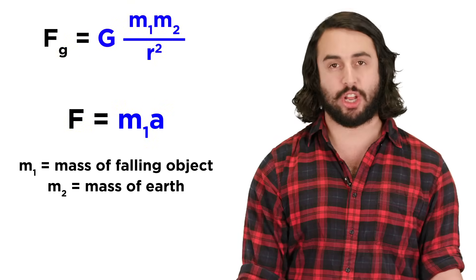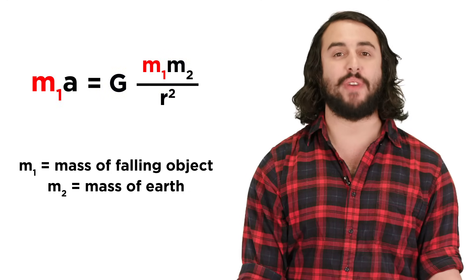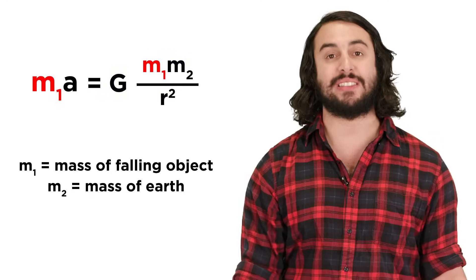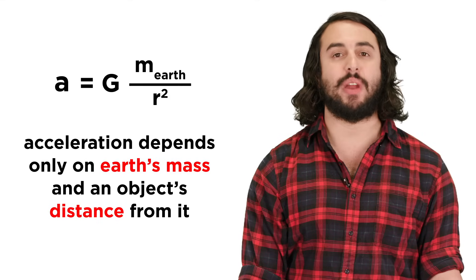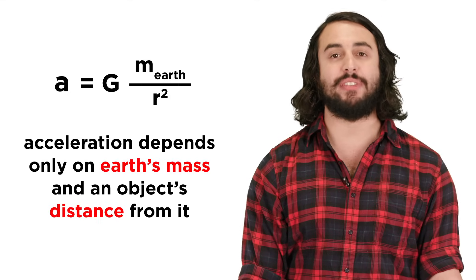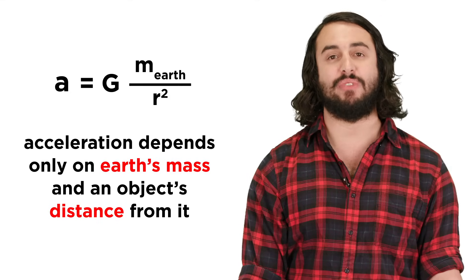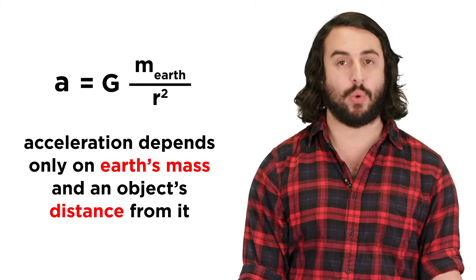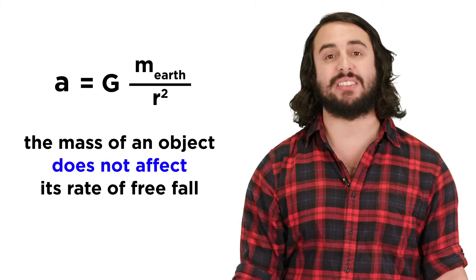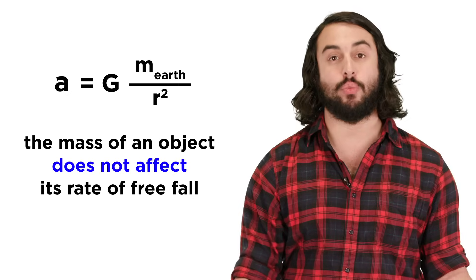If we set these equal to each other, the mass of the object is found on both sides and will cancel out, so we can see that the acceleration due to gravity is equal to the gravitational constant times the mass of the earth divided by the radius squared. This means that the mass of an object does not affect the rate of freefall.